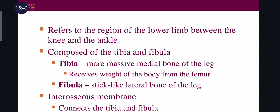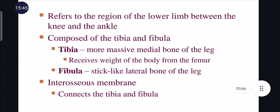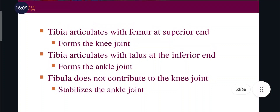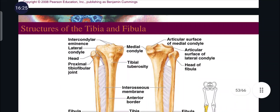The leg refers to the region between the knee and ankle. Leg bones are the tibia and fibula. The tibia is the more massive medial bone, receiving the body's weight from the femur. The fibula is a long, slender, stick-like lateral bone. The interosseous membrane connects the tibia and fibula together. The tibia articulates with the femur superiorly to form the knee joint and with the talus inferiorly to form the ankle joint. The fibula does not contribute to the knee joint but stabilizes the ankle joint.